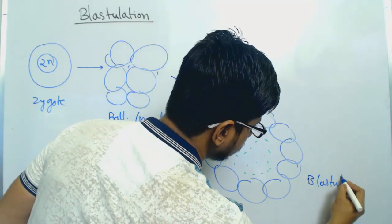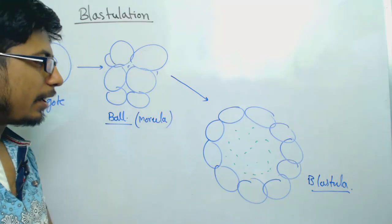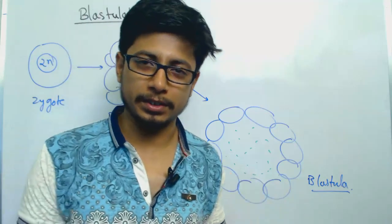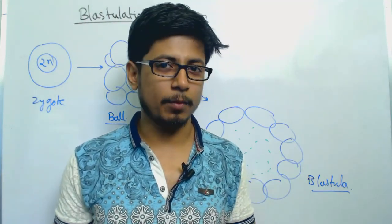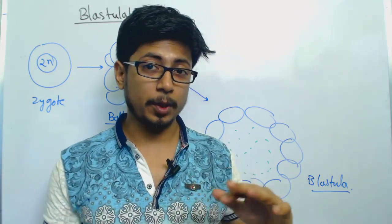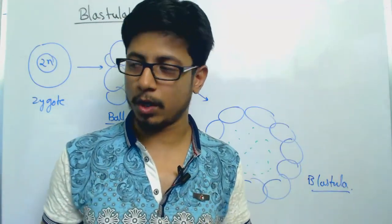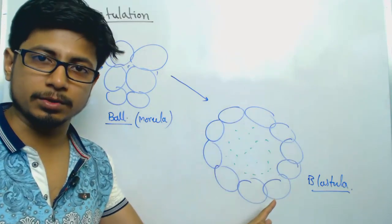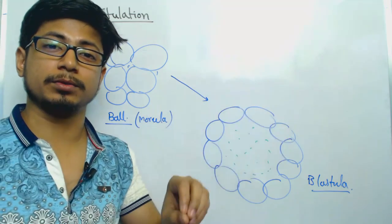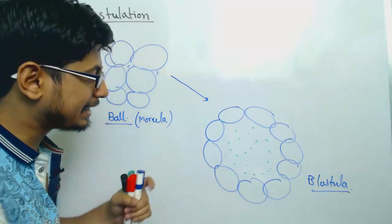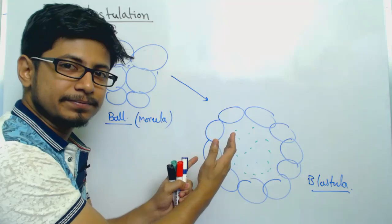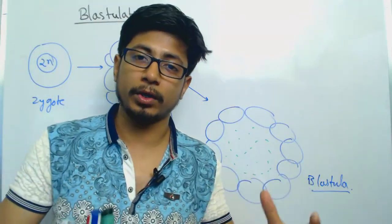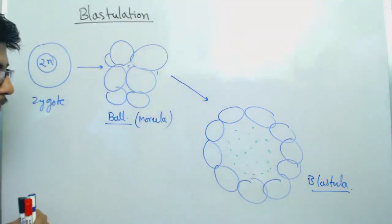To understand blastula formation, we generally use frog or sea urchin as a model organism — mainly frog, because blastulation is very well understood experimentally in frog. The key difference between organisms lies in how the cells arrange. Once arranged as a blastula, it is further converted through gastrulation — folding of the sheet of cells inward — creating three separate tissue layers, from which different body organs and organ systems are generated.